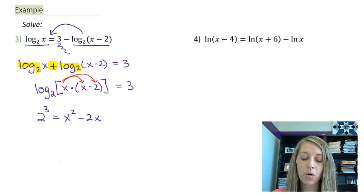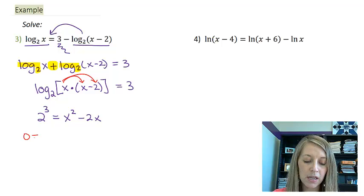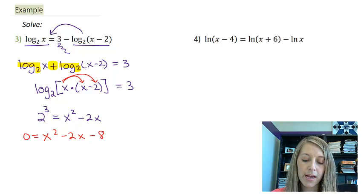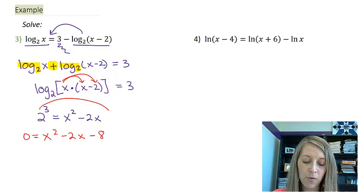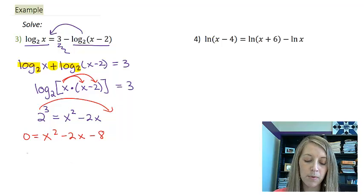Now this is a quadratic equation. All I need to do is set it equal to 0 and solve it by factoring or quadratic formula. So x squared minus 2x, and if I move this to the other side, that would give me negative 8.